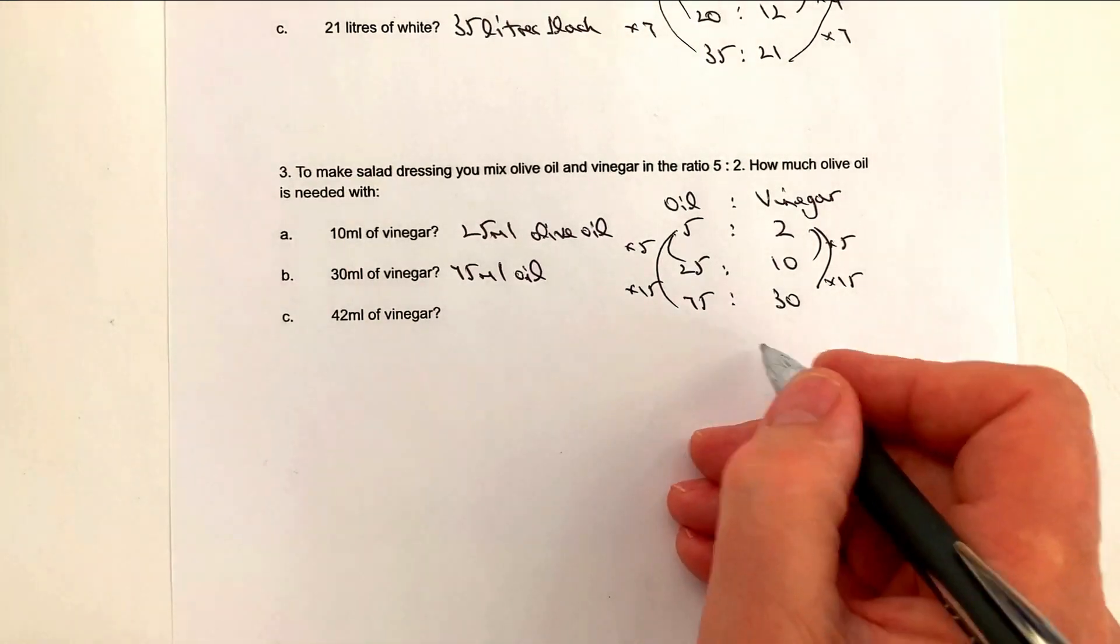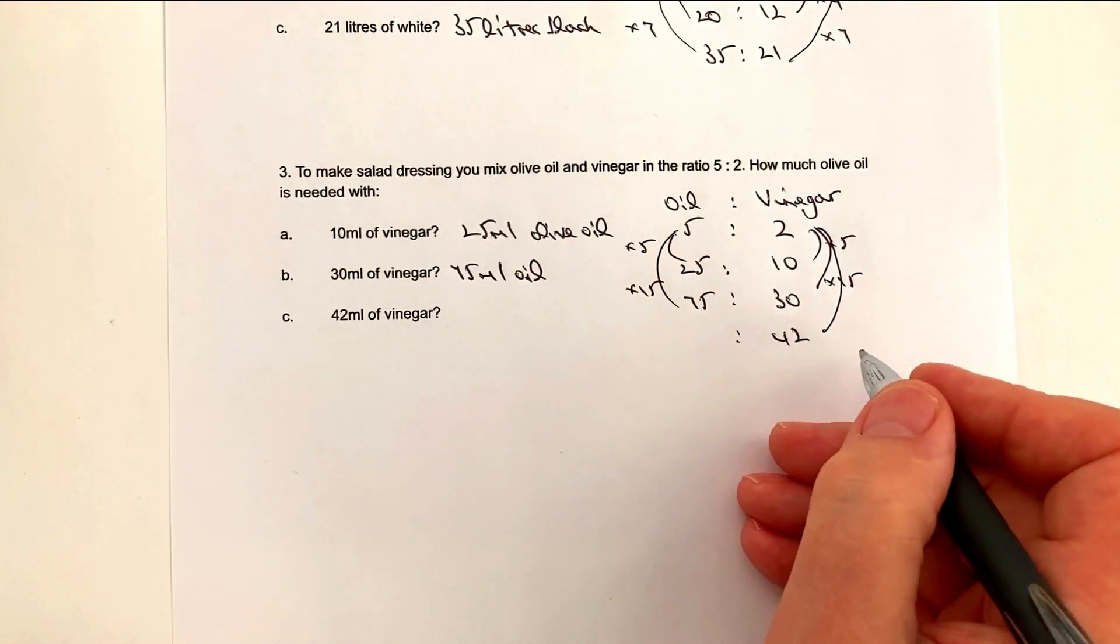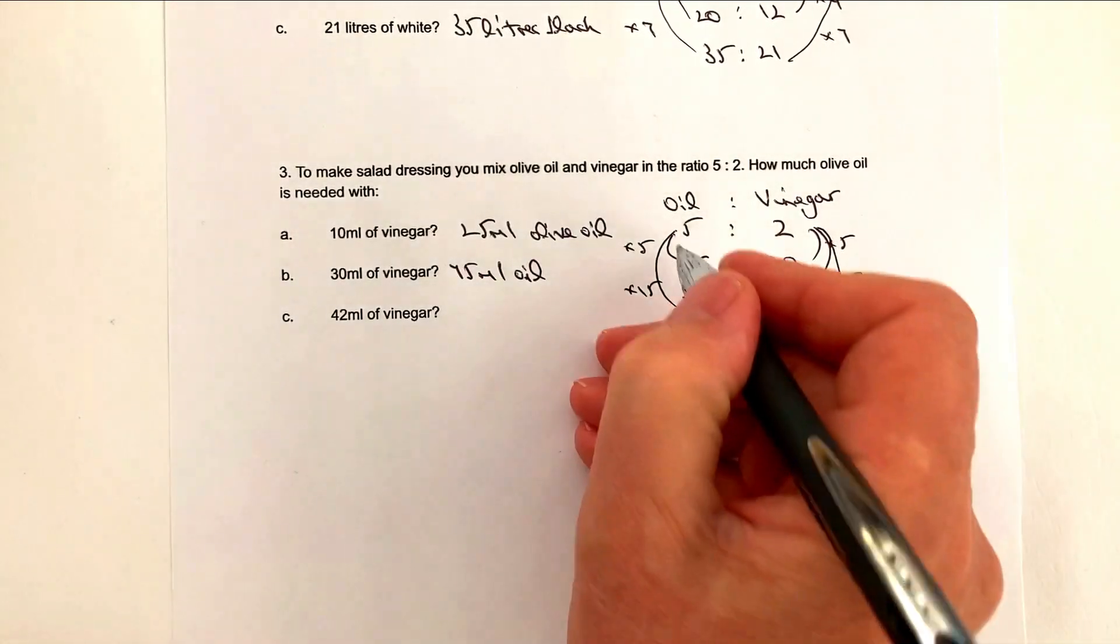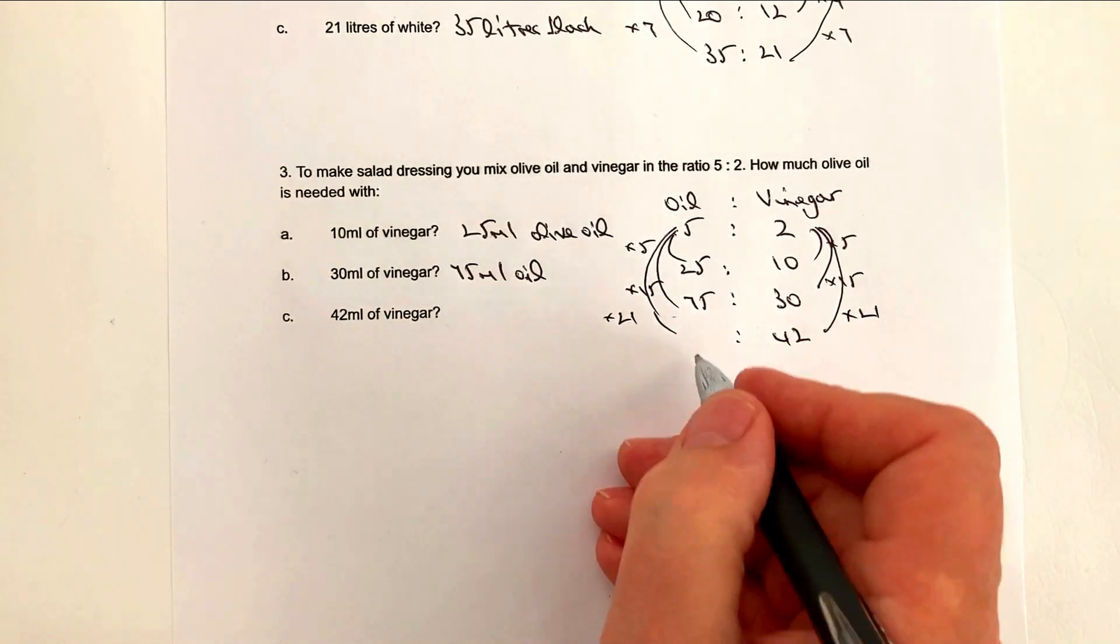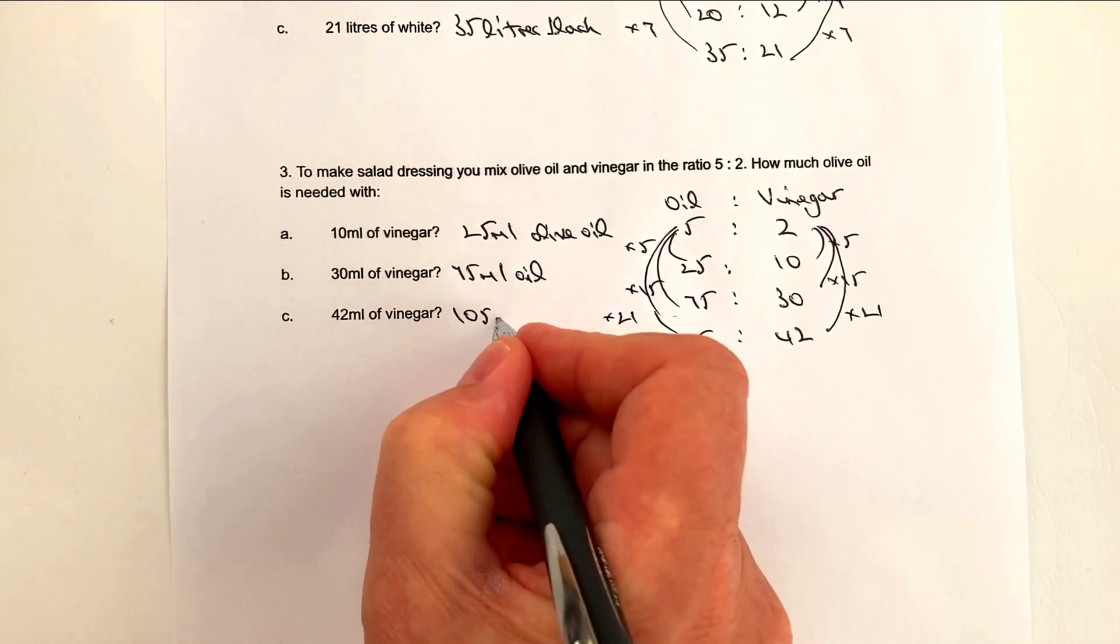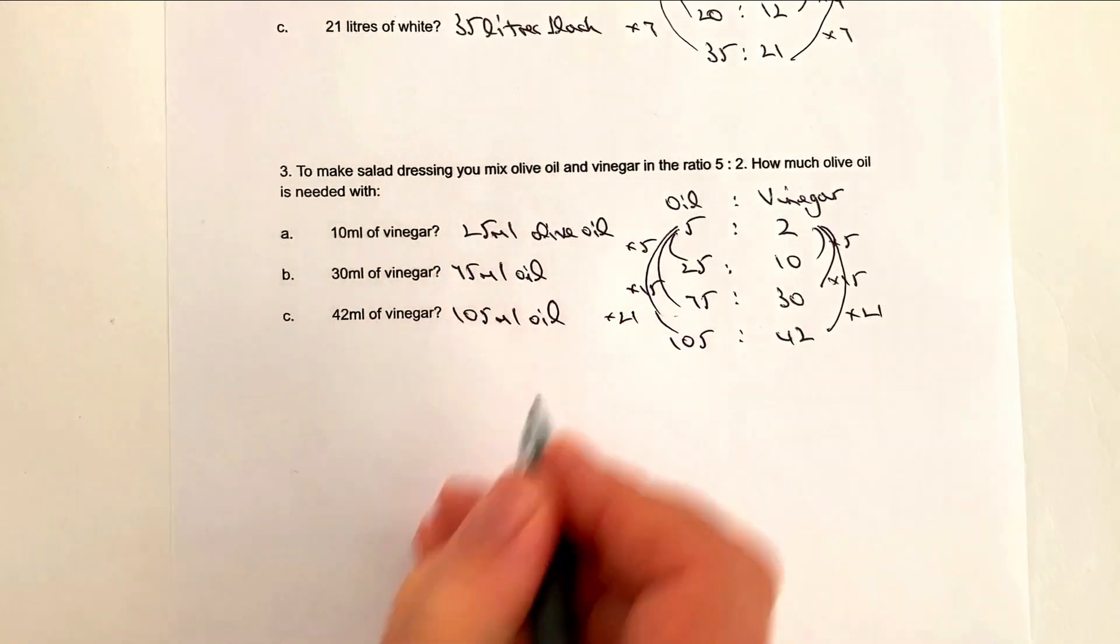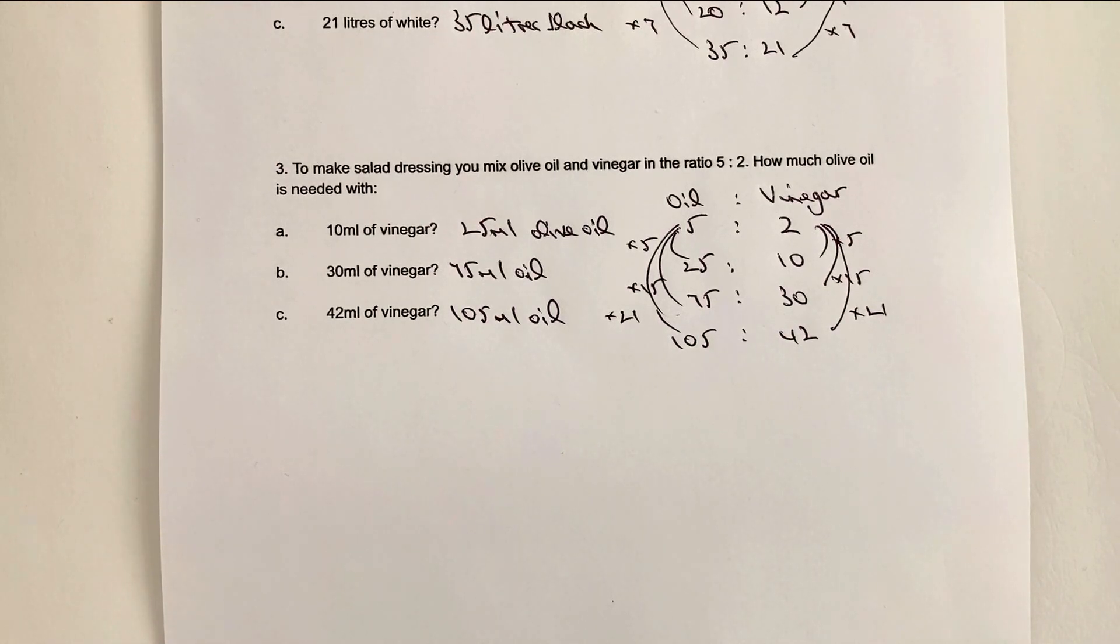Last one then is 42 millilitres of vinegar. Well, 2 times 21 is going to be 42. So 5 times 21 on this side, that's going to give me 105. So that's 105 millilitres of oil. So again, it's exactly the same principle. This whole idea of working down the page will make it much, much easier for you.